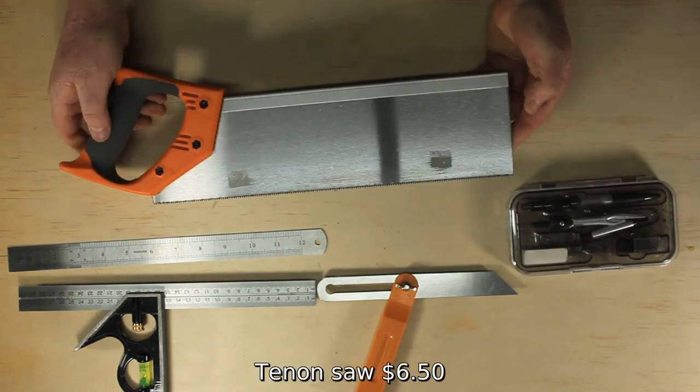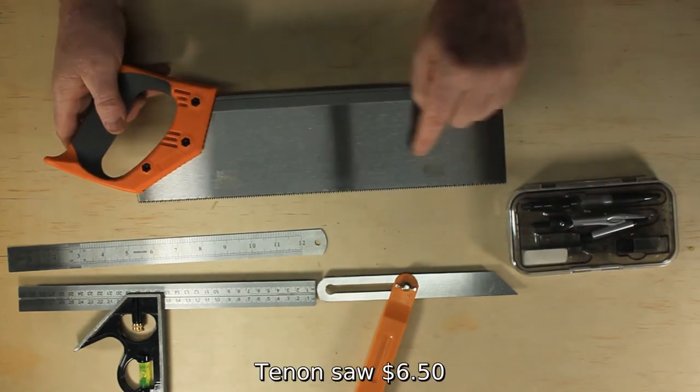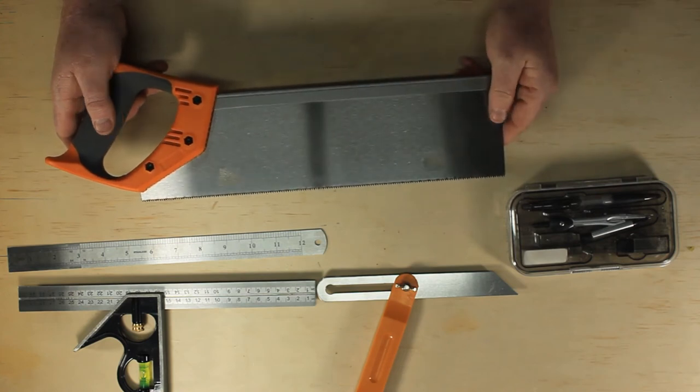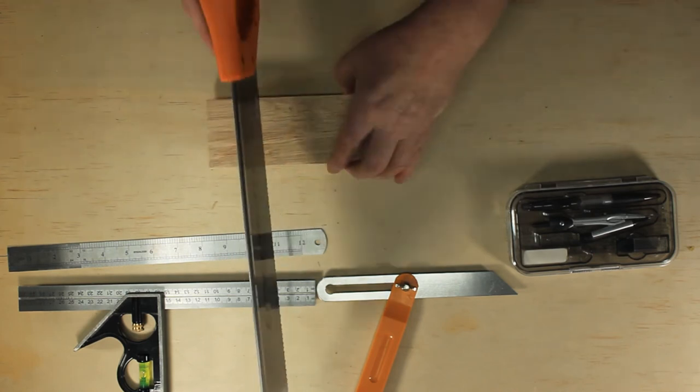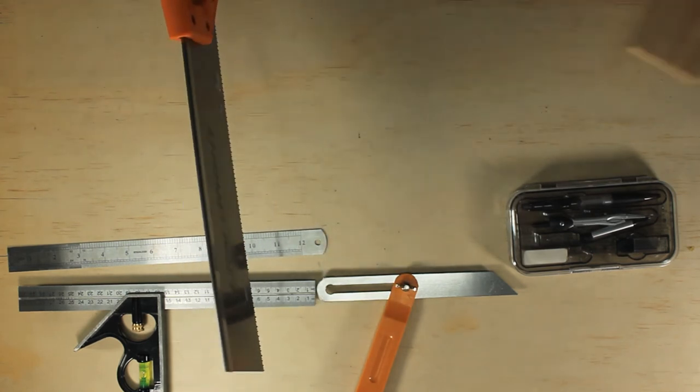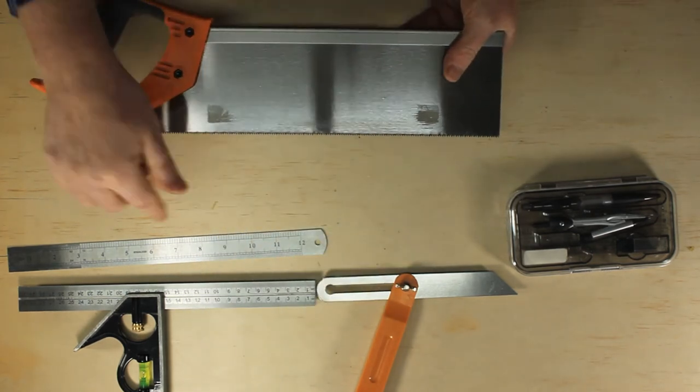The tenon saw is our first specialist saw. It has much finer teeth than our panel saw which lets us make much more accurate and clean cuts. We mostly use it for cutting across the grain of timber but we can also use it for cutting plywood.